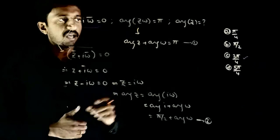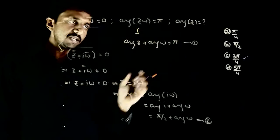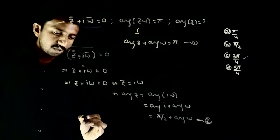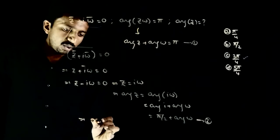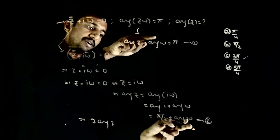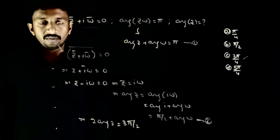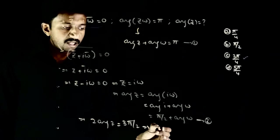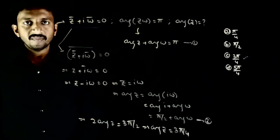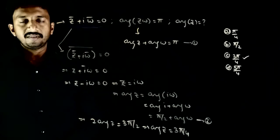Ye dono equations se ab argument of omega ko eliminate karenge. Argument of omega right hand side mein bhi hai, left hand side mein bhi hai, dono cancel ho jayega. So if I add equations 1 and 2, I get 2 times argument of z. This is going to get cancelled out. Is equal to π plus π/2, which is 3π/2. This implies argument of z is equal to 3π/4. So argument of z is 3π/4 — option C is the right answer. Thank you.